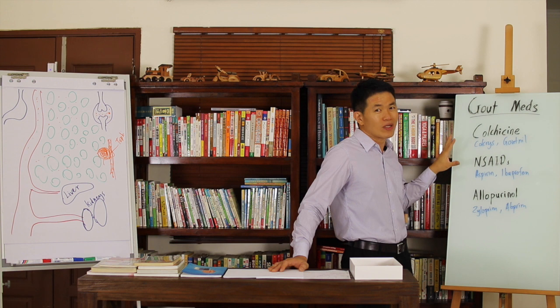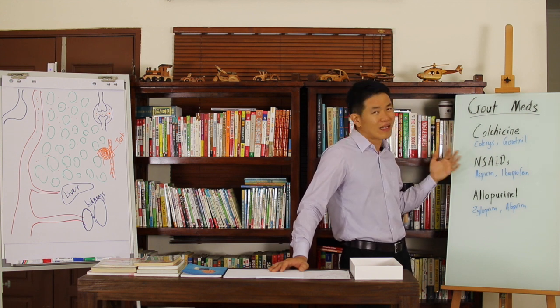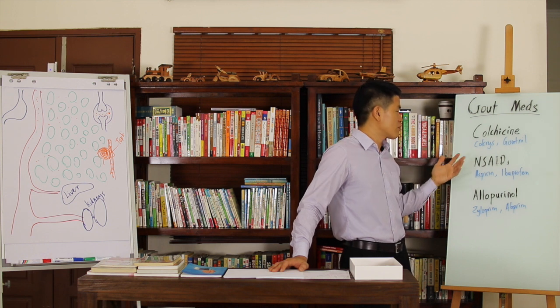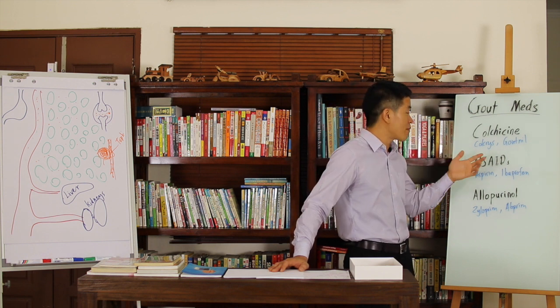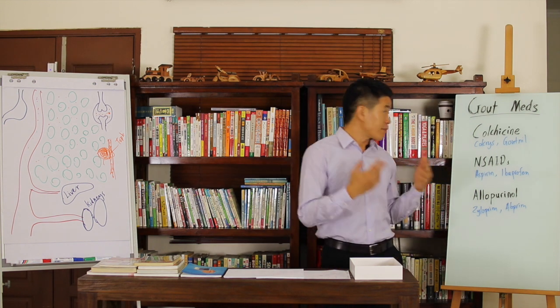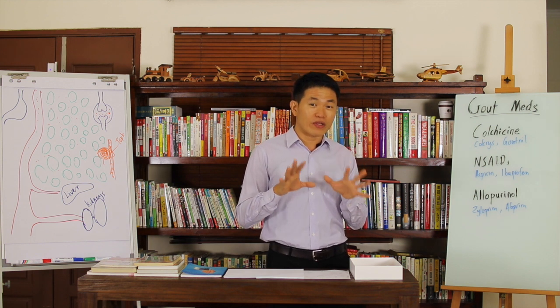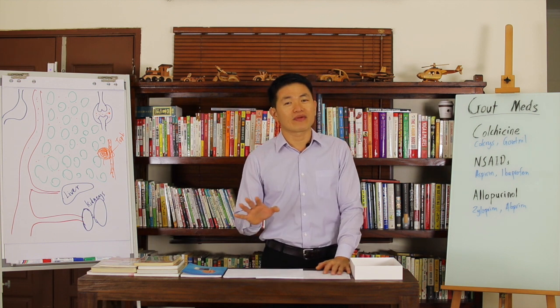Whereas another, usually when you go to see doctor, they will give you two types of medicine. They give you colchicine and then another one is a non-steroidal anti-inflammatory drug such as aspirin and ibuprofen. The function, same as colchicine, but it used to reduce the inflammation and at the same time reduce the pain.